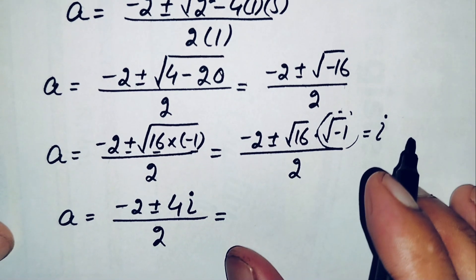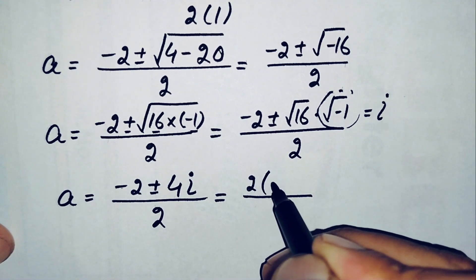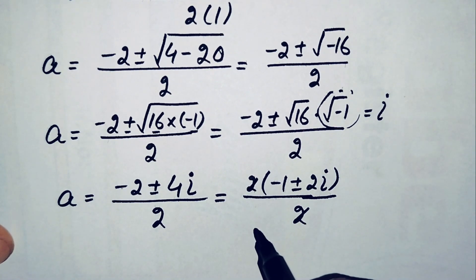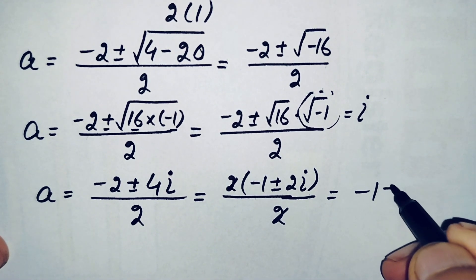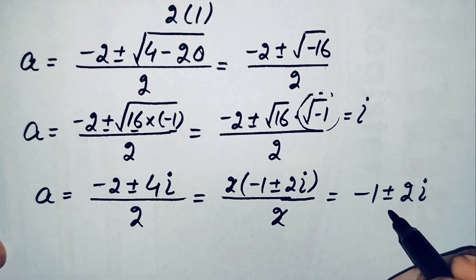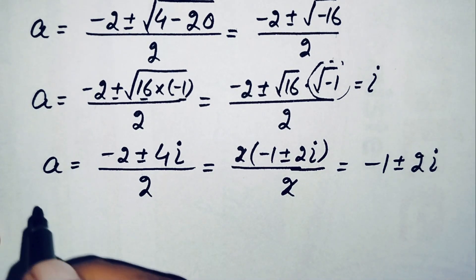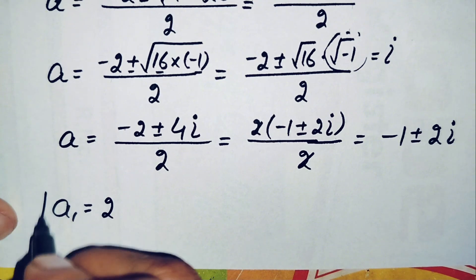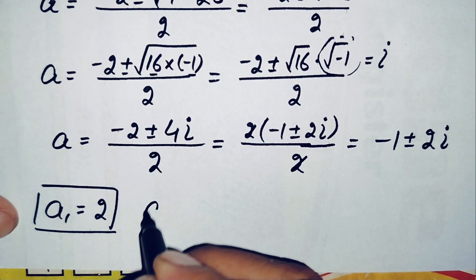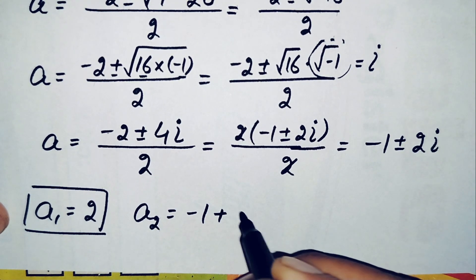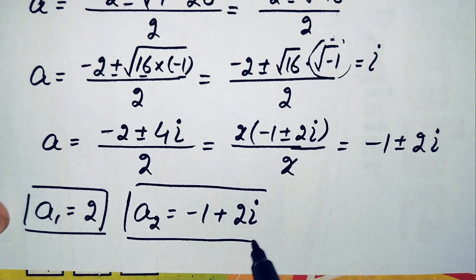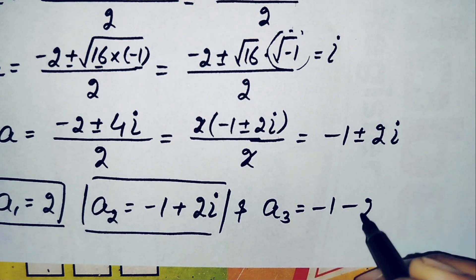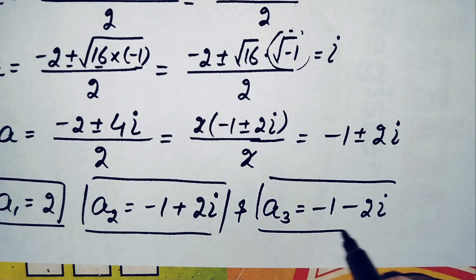Here we will take 2 common from the numerator, so this will become minus 1 plus minus 2 iota divided by 2. So here we will cancel the 2s, leaving minus 1 plus minus 2 iota as two values. So finally we have three possible values of a. The first value is a1 is equal to 2, which is our first real solution. The second solution is a2 is equal to minus 1 plus 2 iota, which is a complex solution. And the third solution is a3 is equal to minus 1 minus 2 iota, which is also a complex solution.